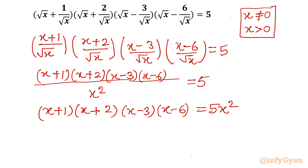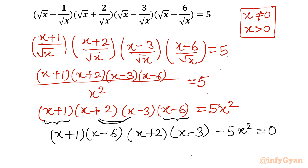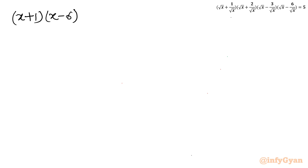Let us get started by considering two terms together. I will write (x+1)(x-6) and (x+2)(x-3) as two separate products, and then consider the whole expression minus 5x² equal to 0, or equivalently equal to 5x².